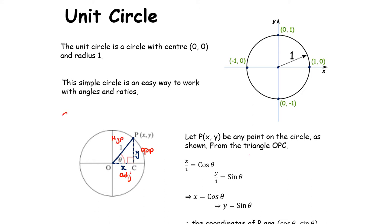Working with sin, cos, and tan — using SOH CAH TOA — we can see that cos equals adjacent over hypotenuse, which is x over 1. So cos of theta equals x. Similarly, sin equals opposite over hypotenuse, which is y over 1. So sin of theta equals y. Therefore, the coordinates of P, instead of being (x, y), can be written as (cos θ, sin θ).